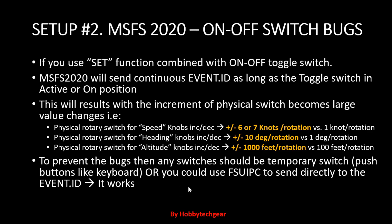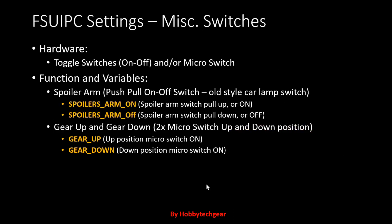If a set function is available inside FSUIPC variables, you can use that without creating this workaround box. An example is the gear function. For the spoiler arm and gear up/gear down, there is a physical switch using micro switches — one micro switch in the on position and another in the off position, like gear-down position. The setup will be demonstrated in FSUIPC.